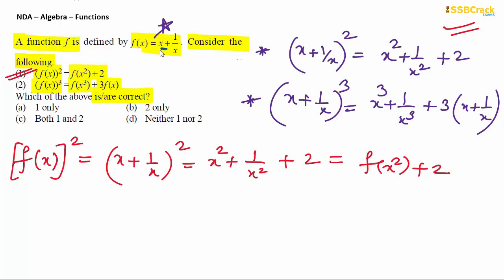If you know the evaluation concept, when the function is x plus 1 by x, then f of x square should be x square plus 1 by x square - just replace x with x square. This is the rule for f of x square. This means statement 1 is correct, where we proved that f of x whole square equals (x plus 1 by x) whole square, which expands to f of x square plus 2.